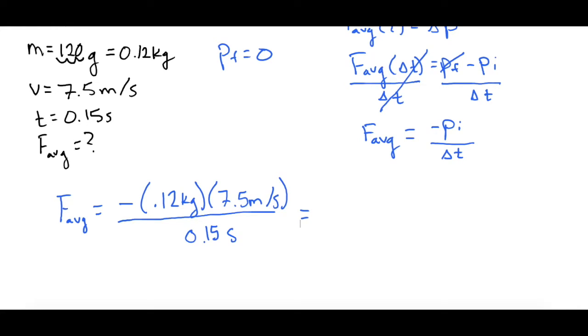So now let's go ahead and plug and chug. Negative 0.12 times 7.5, that gives me negative 0.9 kilograms times meters per second, and we're dividing that by 0.15 seconds. Divided by 0.15, so that gives me negative 6 newtons.